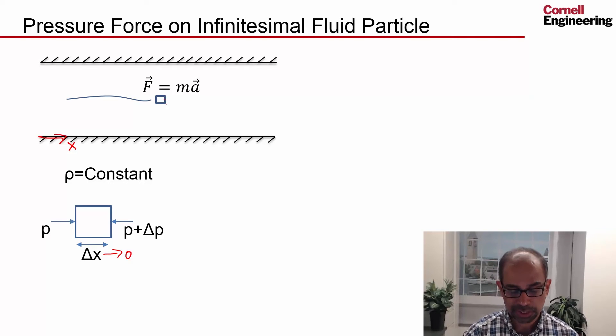The net pressure force is going to be delta p. This p and this p are going to cancel, so I'm going to get delta p. But that's acting in the negative x direction. So I should say minus delta p.